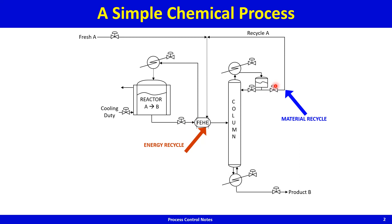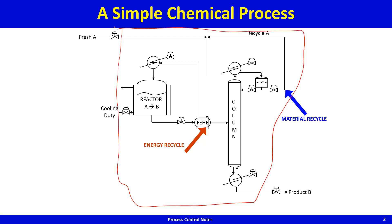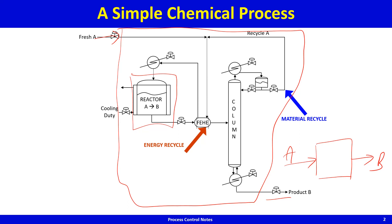What does material recycle do? If you look at the entire plant — the envelope around the entire plant — what comes in is A and only B, the product stream, leaves the plant. If we assume the product stream is pure, all of the A that enters the plant leaves as B. So the utilization efficiency of A to B is 100 percent — every mole of A that enters the process gets converted to B. This 100 percent raw material utilization efficiency is due to recycle, even as the single pass reactor conversion may be 30, 40, 50 percent.